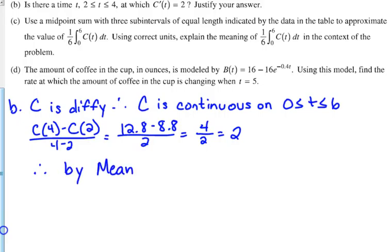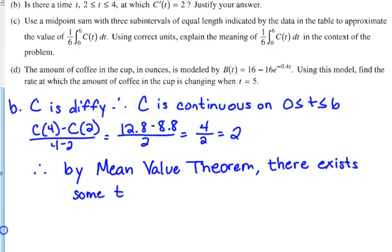I would not abbreviate it just in case. I mean, I'm pretty sure they know what MVT is, but there exists some T between 2 and 4 such that C'(T) equals 2.